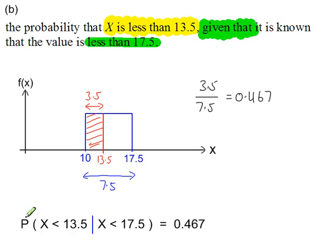So we've worked out the probability that x is less than 13.5, given that x is less than 17.5. A conditional probability.